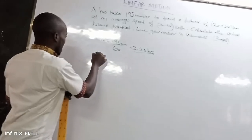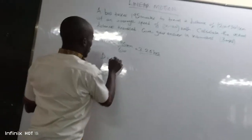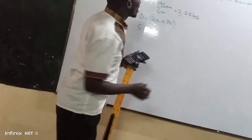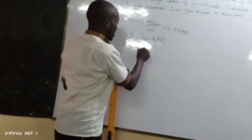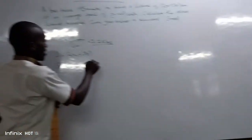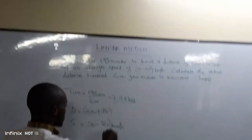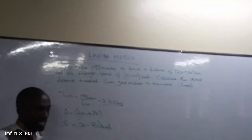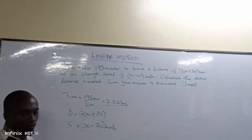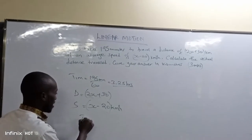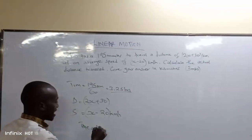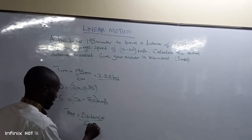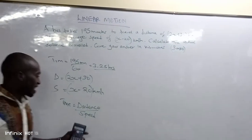So our distance is 2x plus 30, and the speed is x minus 20 km per hour. We also have the time. The formula for time is: time equals distance over speed.